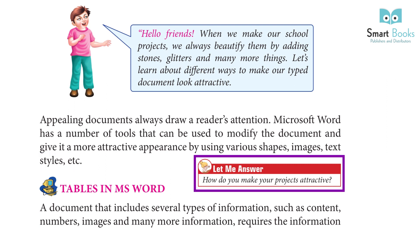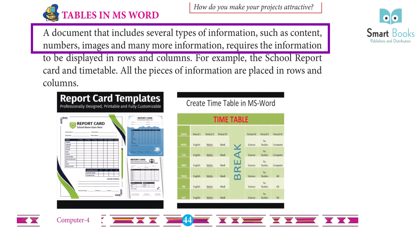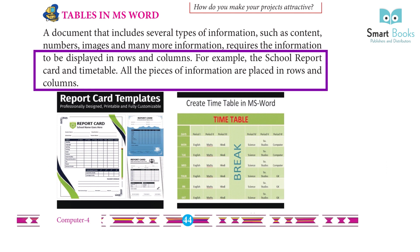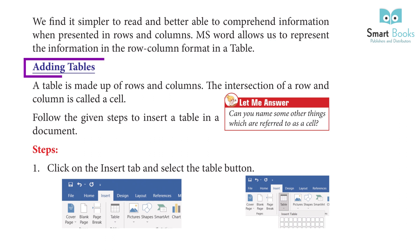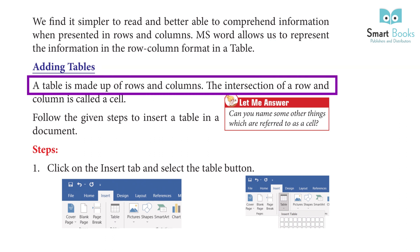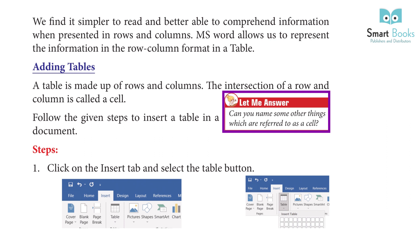Tables in MS Word: A document that includes several types of information such as content, numbers, images, and more requires the information to be displayed in rows and columns. For example, school report cards and timetables — all pieces of information are placed in rows and columns. MS Word allows us to represent information in a row-column format in a table. A table is made up of rows and columns, and the intersection of a row and column is called a cell.